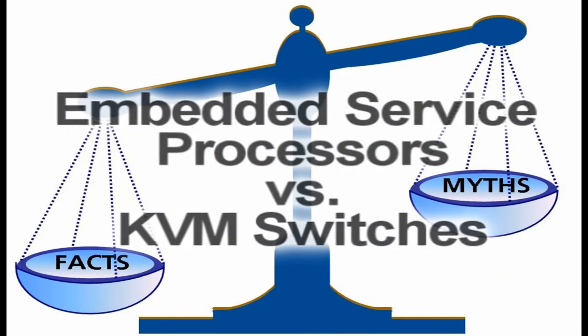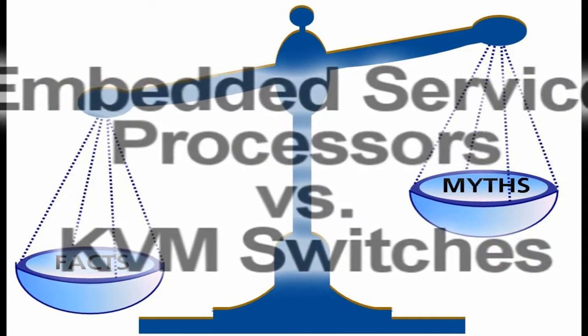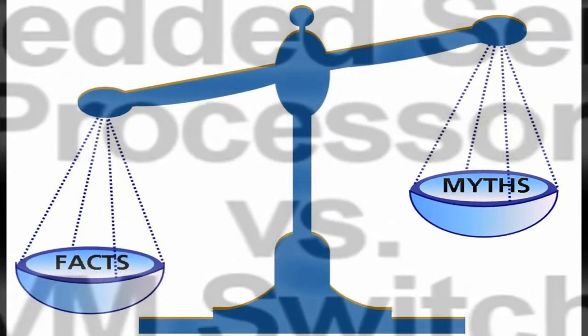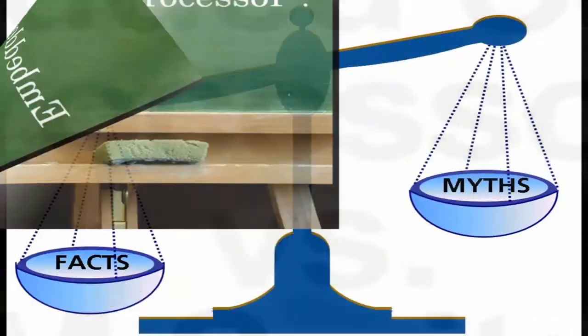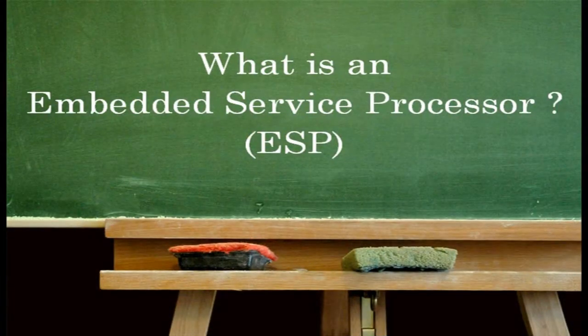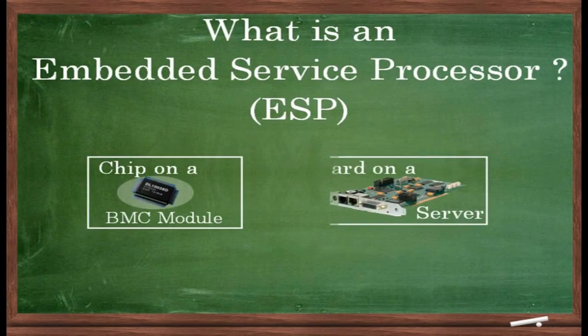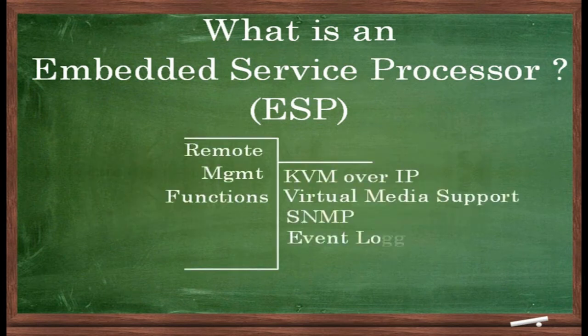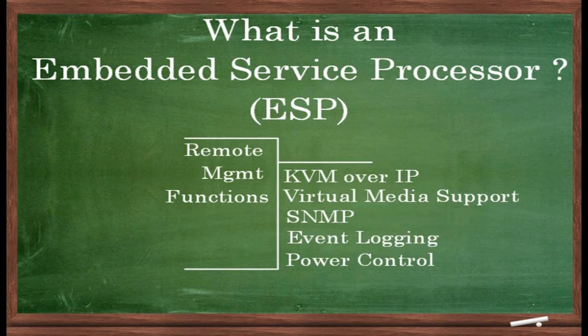Welcome to this fact-check video where we'll discuss the facts and debunk the myths about using embedded service processors versus using KVM switches. Let's start with a quick description of embedded service processors, otherwise known as ESPs. They can be either a chip on a BMC module or a separate card within a server. They allow many remote management functions including KVM over IP, virtual media support, SNMP, event logging, power control, and more.